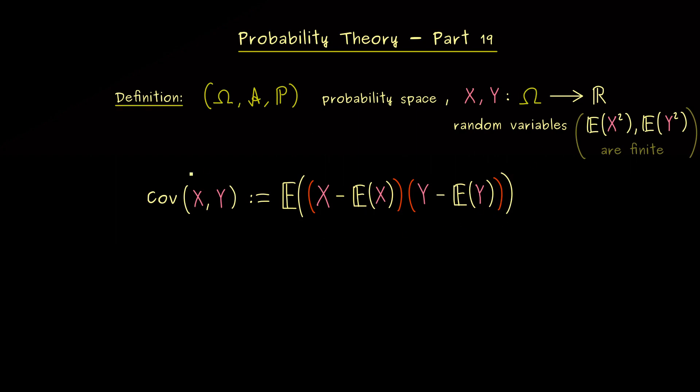So what comes out for the covariance is again a real number. However, here please note, in general, this could be definitely also a negative number. And this is in contrast to the normal variance.